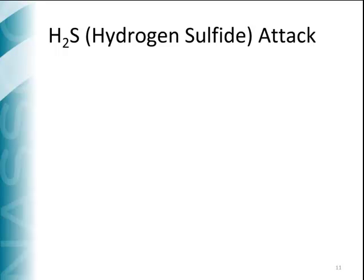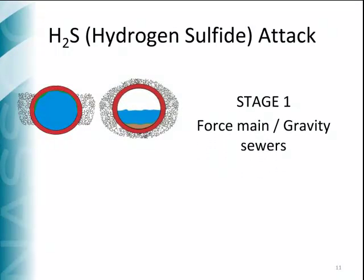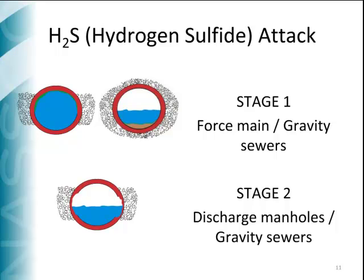Hydrogen sulfide attack in pipelines is represented in two sequential stages. Sulfides are generated under the absence of oxygen within a pipe, a condition called anaerobic. Force mains generally flow full with little aeration and are likely points for sulfide generation. Sulfide is also generated in flat gravity sewers with very laminar flow, allowing anaerobic conditions at the bottom of the pipe. Sulfides in the wastewater are released by turbulent conditions at discharge points and form hydrogen sulfide gas, or H2S. This acidic gas attacks concrete and metal surfaces. Because hydrogen sulfide is heavier than air, deterioration usually starts low or at the flow line.